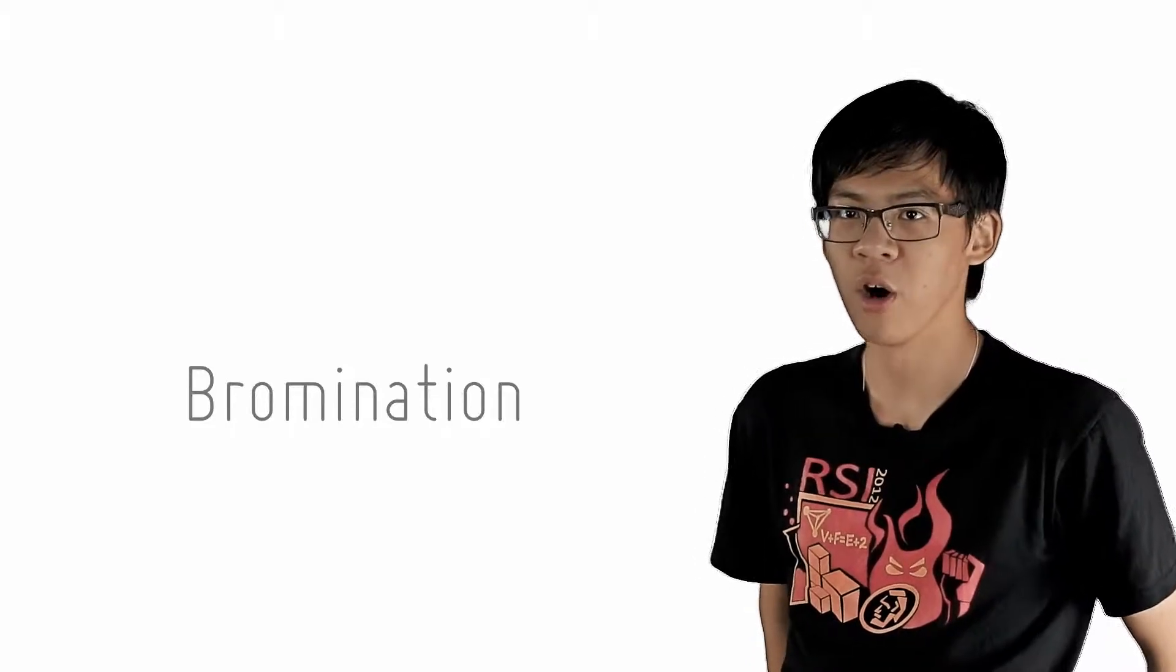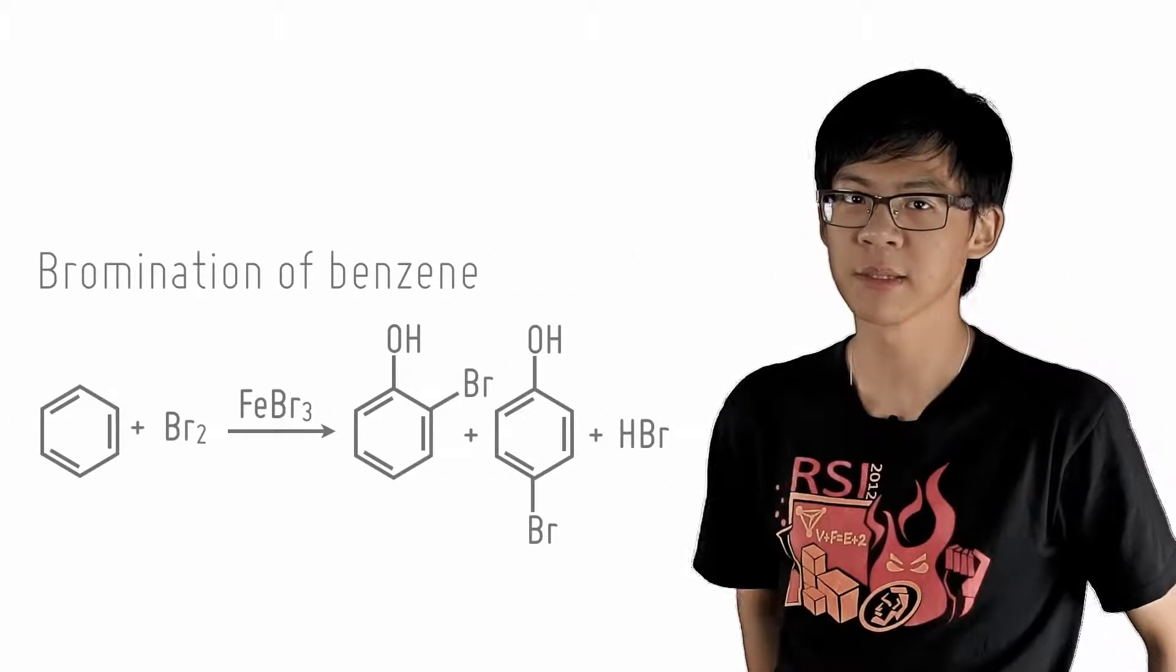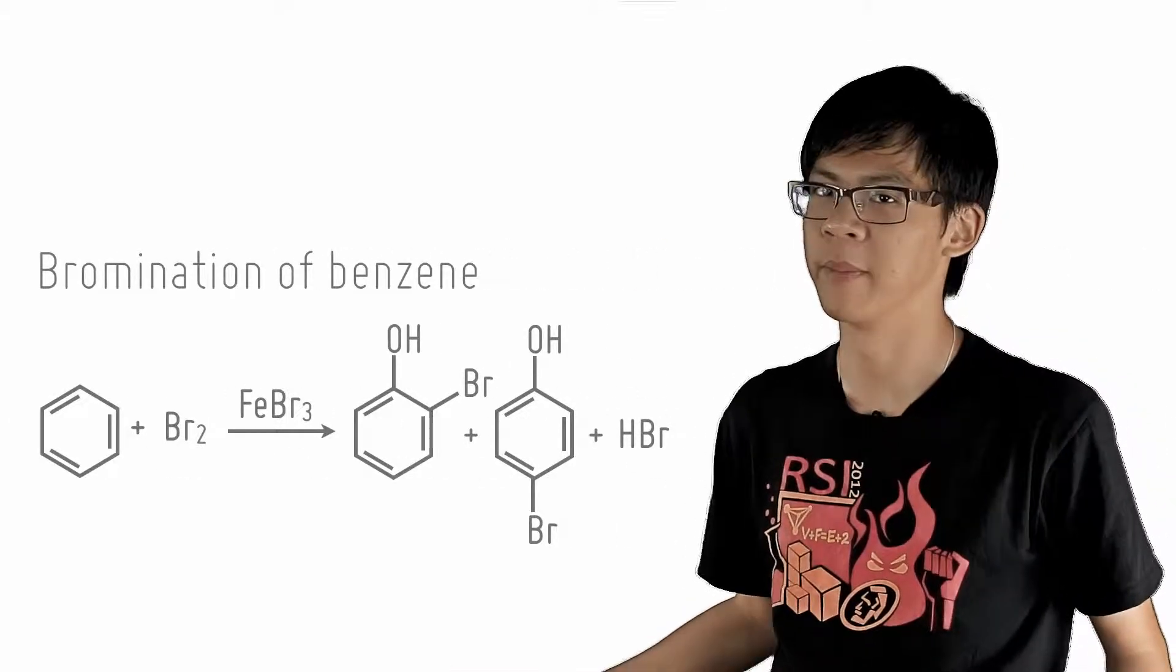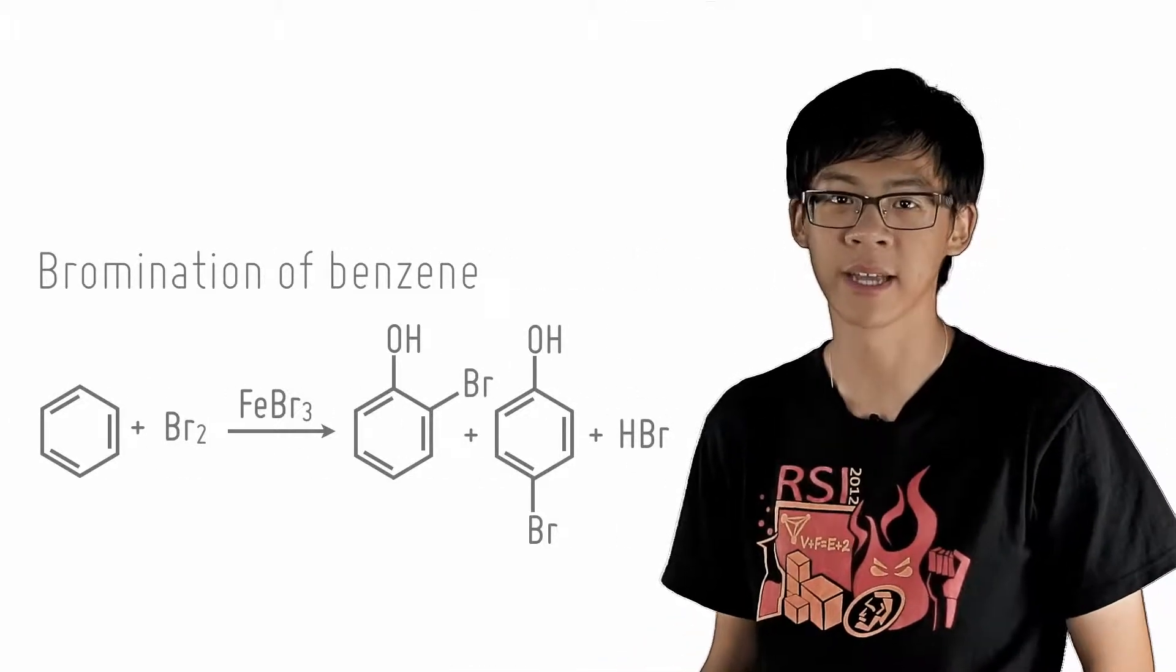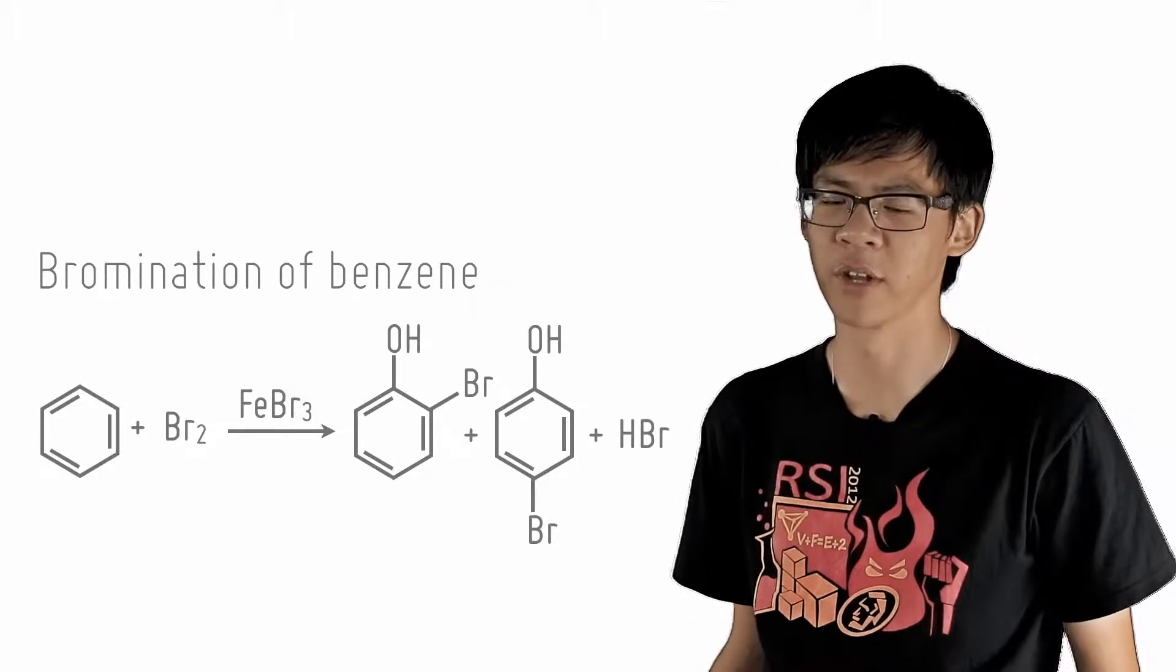The other important substitution reaction of phenols is bromination. We recall that for benzene, substitution of bromine happens when we add bromine as well as a halogen carrier catalyst such as FeBr3 at room temperature to benzene, affording bromobenzene.